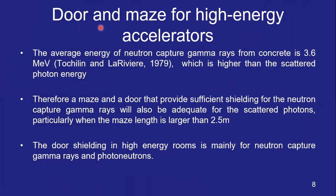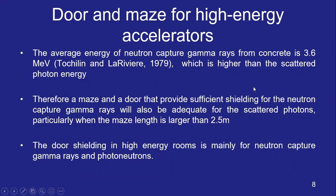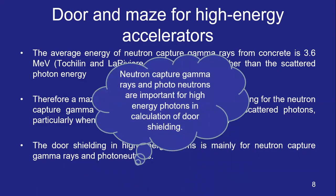Moving to door and maze design for high energy accelerators: the average energy of neutron capture gamma rays from concrete is 3.6 MeV, which is higher than scattered photon energy. A maze or door providing sufficient shielding for neutron capture gamma rays will also be adequate for scattered radiation, particularly when the maze length is larger than 2.5 meters. Door shielding in high energy rooms is mainly for neutron capture gamma rays and photoneutrons.